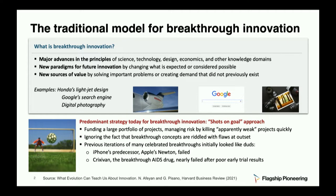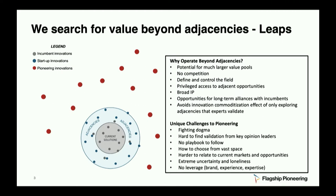As scientists and engineers, this notion of shots on goal — almost approximating a lottery — was always really offensive to me. But it is what you do if you think that your chance of any one shot going in is so low that you just have to take lots of shots on goal. When we set out to create Flagship Pioneering back in 2000, our goal was to see whether we could systematically create breakthrough innovations and also systematically create companies around them.